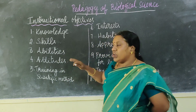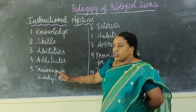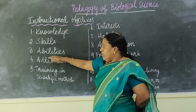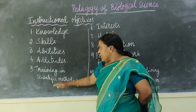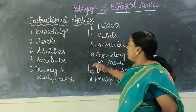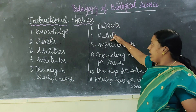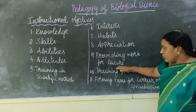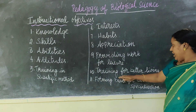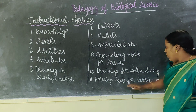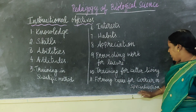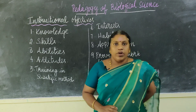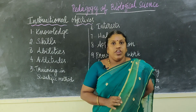So these are the major instructional objectives of teaching science: knowledge, skills, abilities, attitude, training in scientific method, developing their interest, habit formation, appreciation ability, providing work for leisure time, training for better living, and forming the basis for their career or specialization. Be clear. Thank you.